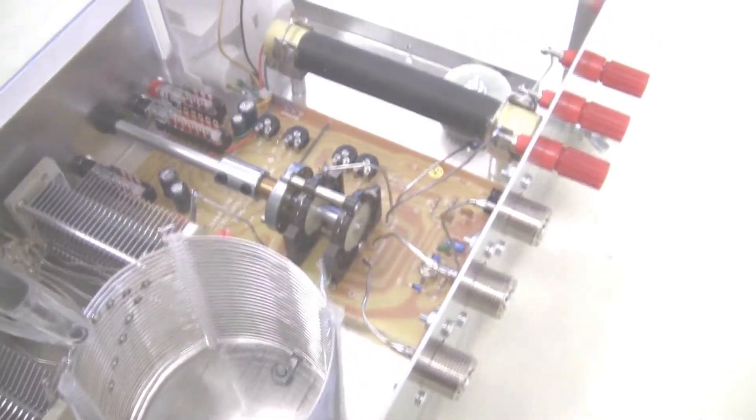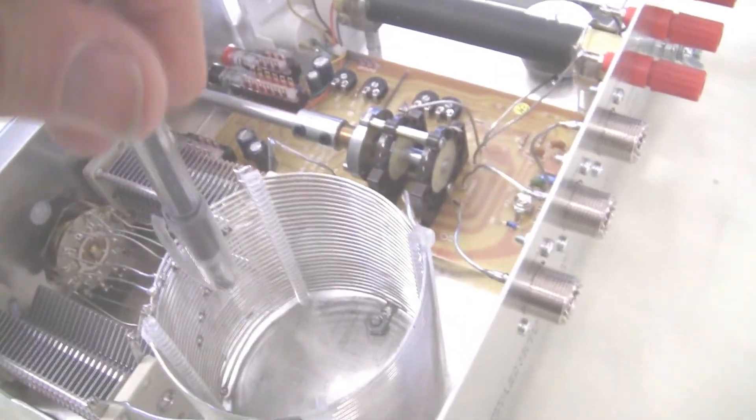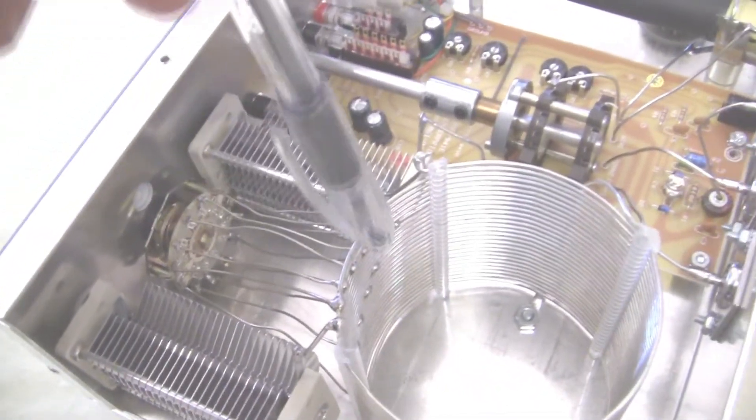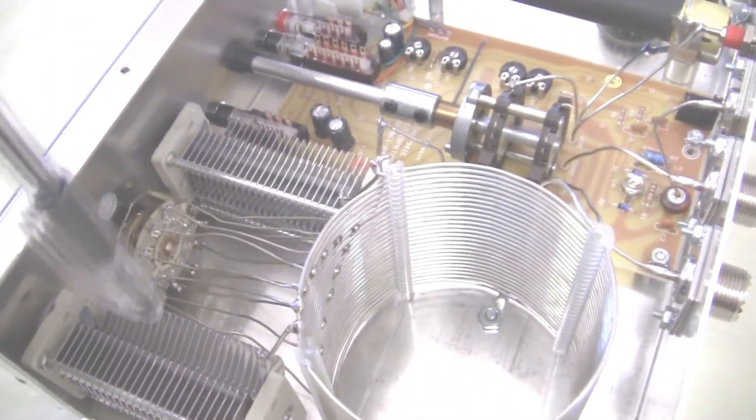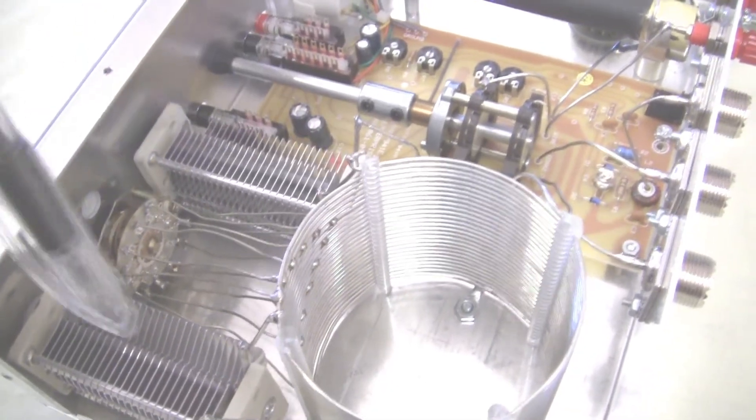Here's the inductor. It has taps on it here. You can see the taps. All these wires are going over to a switch, so we can select different inductances and different capacitors. This is the whole tuner itself.